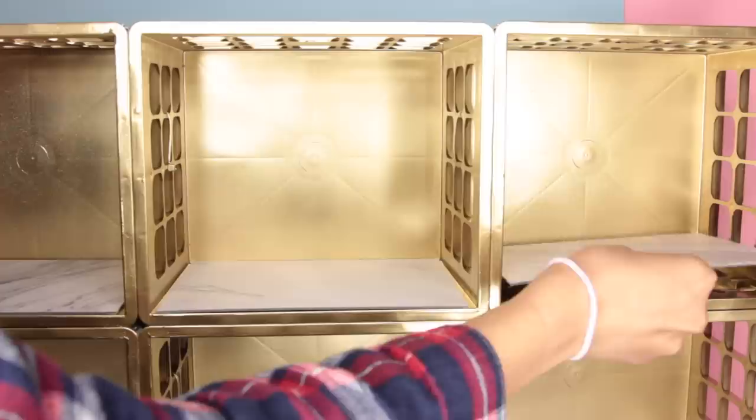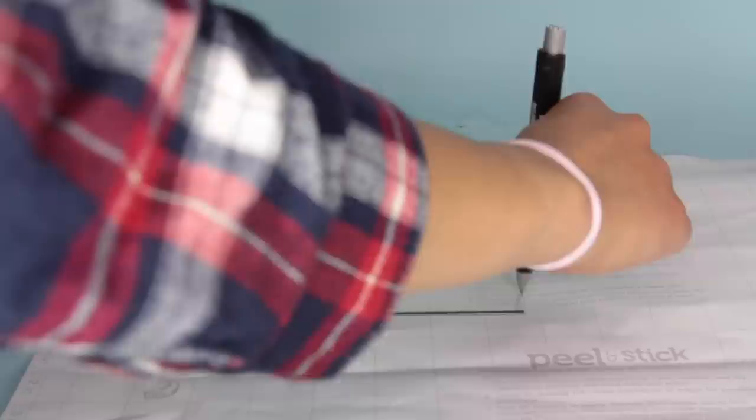I bought these five by seven gold picture frames. I got three of them total. Now you're going to want to take the glass out of these frames. If you plan on using the tile, you can just go ahead and throw the tile inside of there and then put the backing back down. But if you're using contact paper like me, what you're going to do is take that glass and then cut out a piece of contact paper that fits the size of that glass.